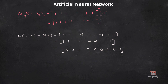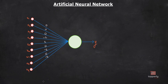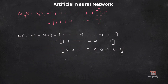Now let's draw the architecture. The architecture has 9 input nodes connected to a linear summarizer from which the output is taken. The weights are provided as per the values we found.